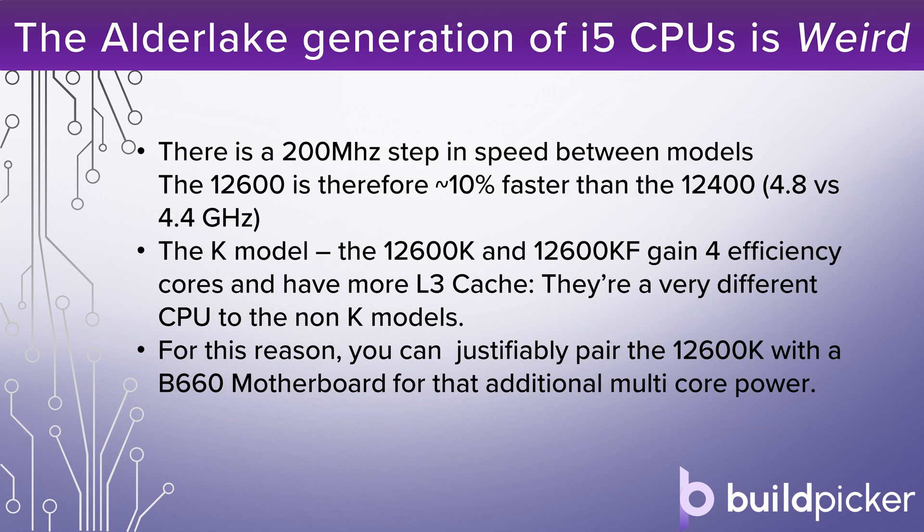The Alder Lake generation of i5 CPUs is unusual — there's a bigger range here than there's been in any previous i5 generation. There's a 200 MHz step in speed between the models, so the i5-12600 is around 10% faster than the i5-12400, with a 4.8 versus 4.4 GHz peak boost clock. The K models — the 12600K and 12600KF — gain four efficiency cores over the other models and have more Level 3 cache. They're a very different CPU to the non-K models and could be thought of as a cut-down i7 rather than a pumped-up i5. For this reason it's perfectly justifiable this generation to pair the i5-12600K with a B660 motherboard to gain those additional four E-cores for multi-core power.